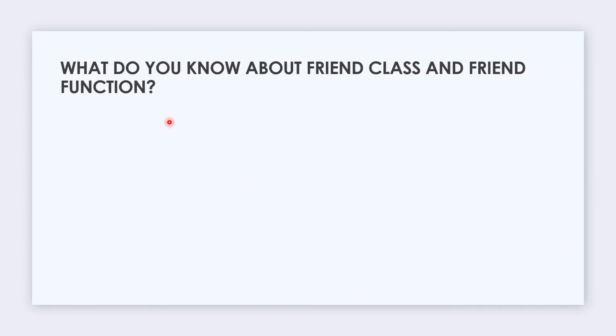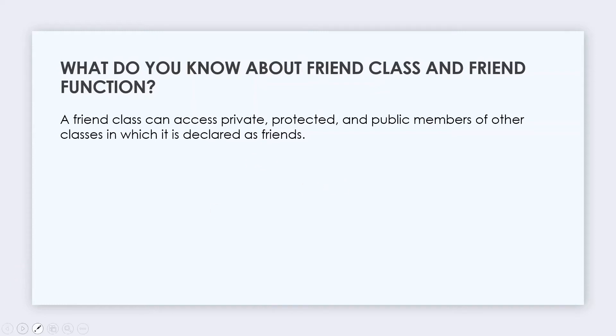The next question is: What do you know about friend class and friend function? A friend class can access private, protected, and public members of other classes in which it's declared as a friend. In inheritance there are access specifiers as private, protected, and public. If we have a private access specifier of one function, then we can't access that in another class.